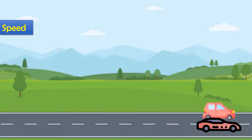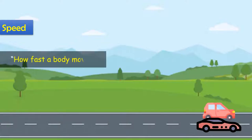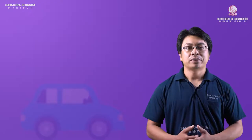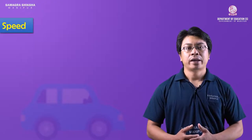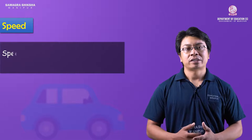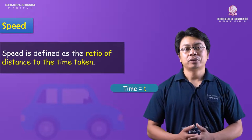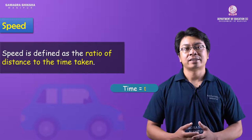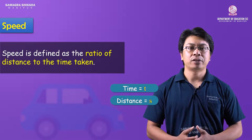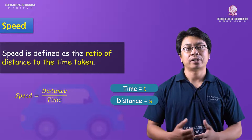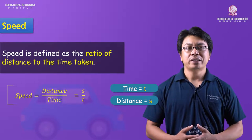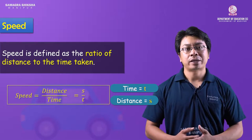It is important to know how fast the body moves. Speed is defined as the ratio of distance to the time taken. The SI unit of speed is meter per second.